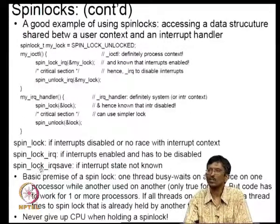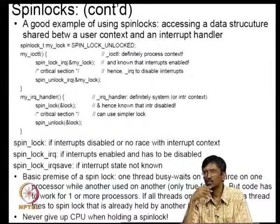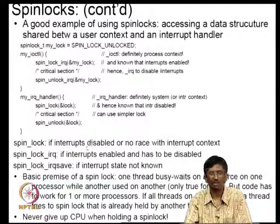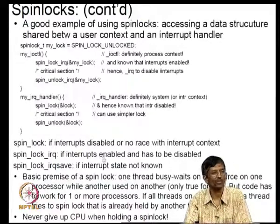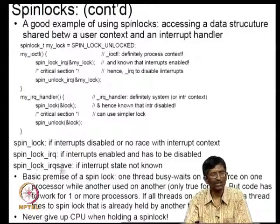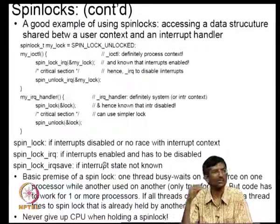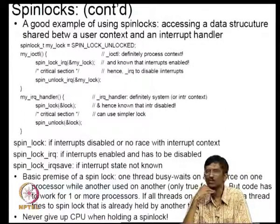Sometimes you are coming through multiple levels of calls across subsystems and you do not know exactly whether interrupts are disabled or enabled. In that unknown state, you can use IRQ_save, which saves the interrupt state so you do not have to worry about it. Then at exit you restore it.